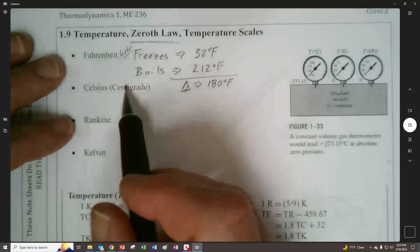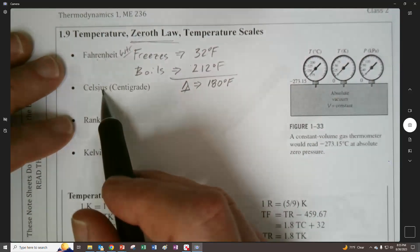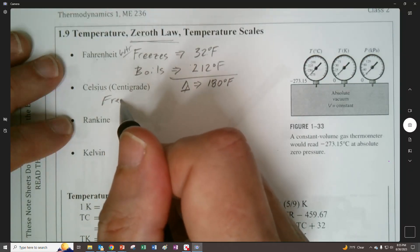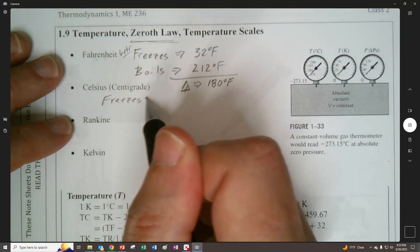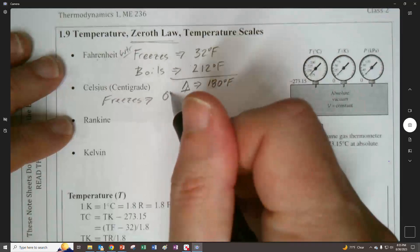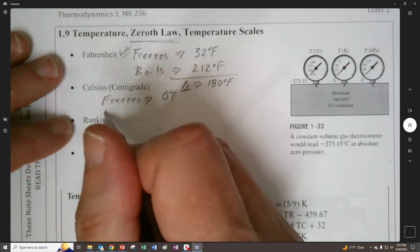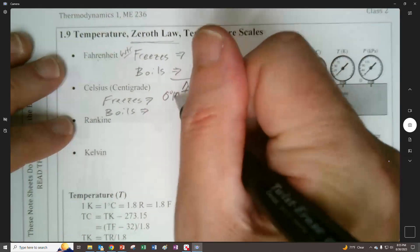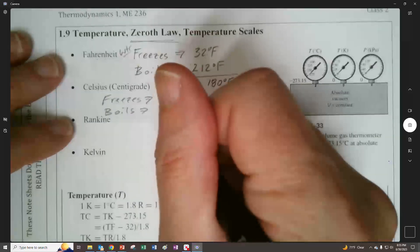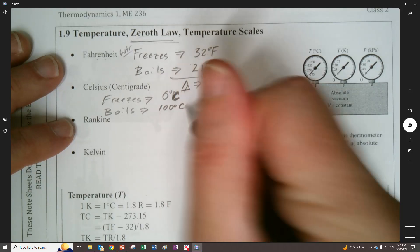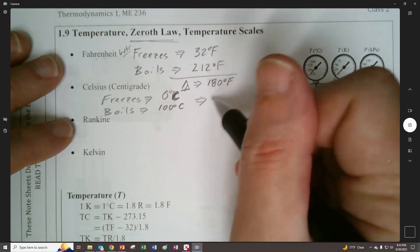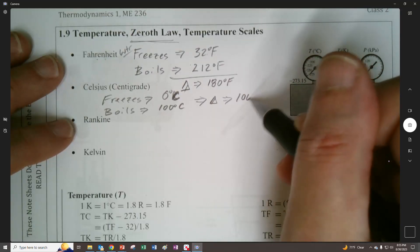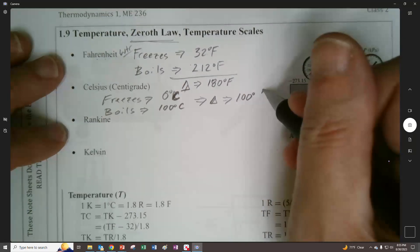So the difference between those, the delta in there is 180 degrees Fahrenheit. This kind of pops up a little bit later when talking about the in-between types of thing, this 180 degrees Fahrenheit. Well, let's introduce it right here. We have Celsius, where it freezes at 0 degrees Celsius and it boils at 100 degrees Celsius.